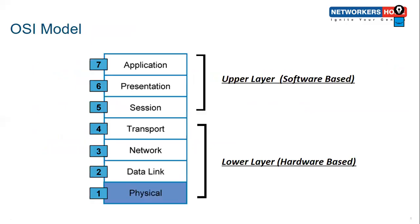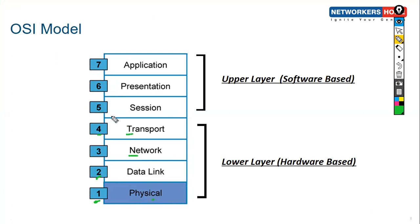The OSI model is divided into seven layers: L1 is the Physical layer, L2 is Data Link, L3 is Network, L4 is Transport, L5 is Session, L6 is Presentation, and L7 is Application.